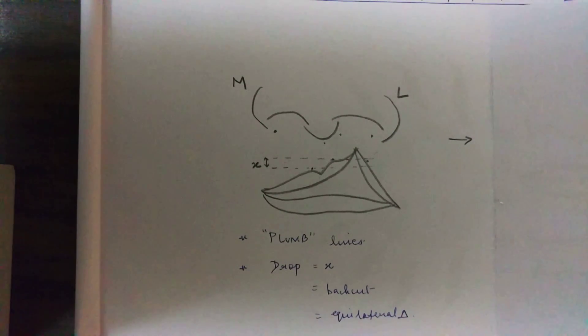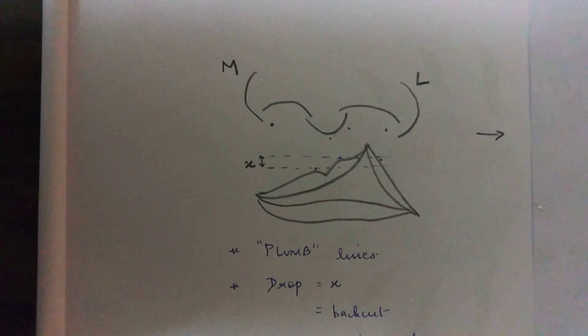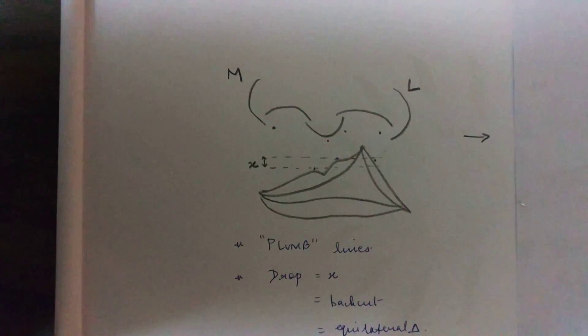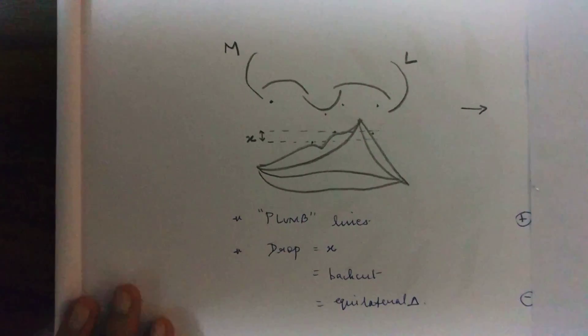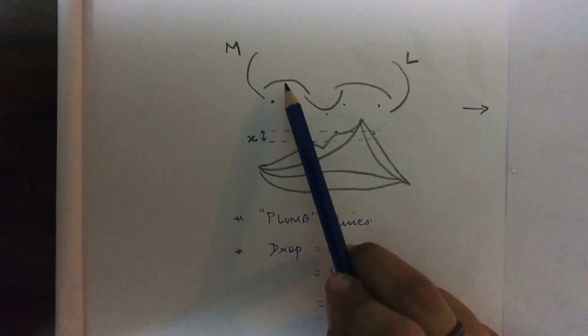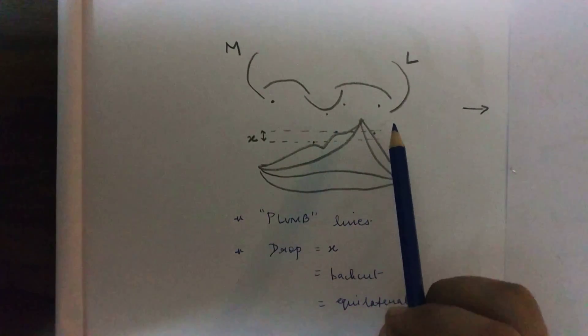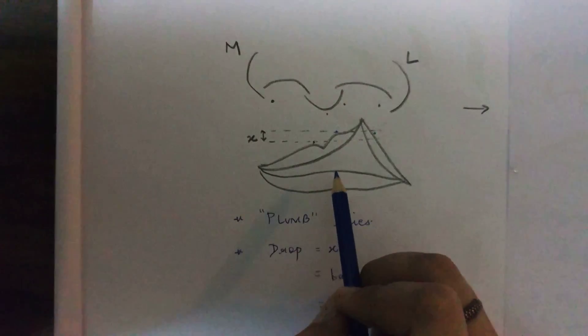There are certain terminologies that need to be known before learning about the steps for this technique. What is a plumb line? What is a drop? What is a back cut? And what we use it for. So the original drawing is same as for any other flap marking, which is the nose and the lip with all the landmarks. Now first, we will see what these terminologies are.